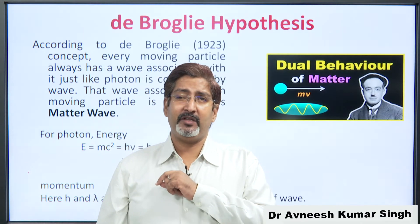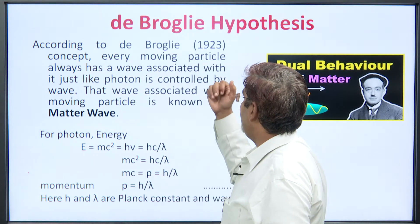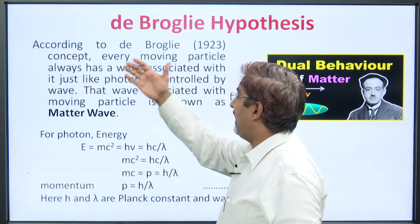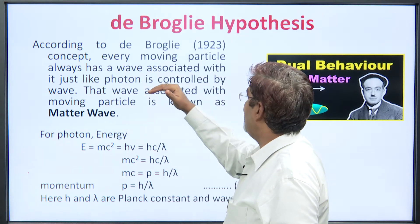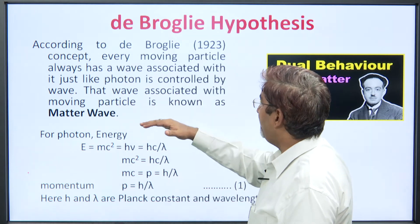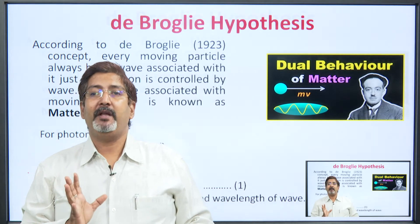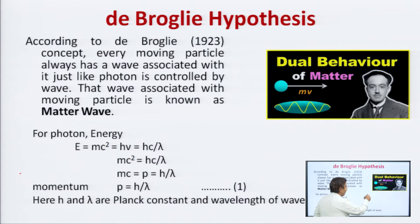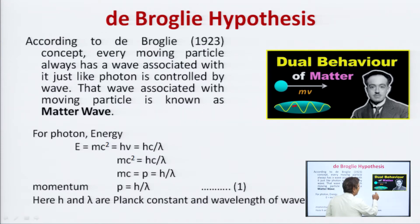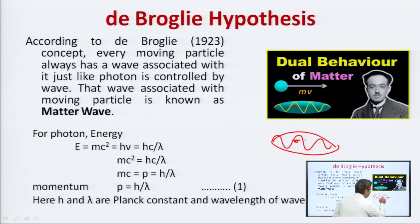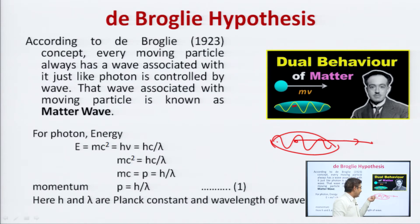Louis de Broglie, a very bold scientist, introduced in 1923 the idea that every moving particle always has a wave associated with it, just like a photon is controlled by a wave. That wave associated with a moving particle is known as a matter wave. This is a different kind of wave — not a general wave. A particle is surrounded by a wave packet, and the matter wave moves with the particle.